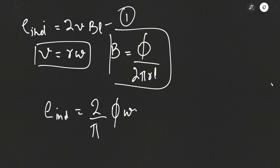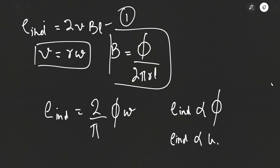We can know two things from this: E induced is proportional to φ, and E induced is proportional to ω. So greater the flux or the field, more will be the voltage induced in the rotating loop, and greater the speed of rotation, more will be the induced voltage. For a DC generator, increasing the magnitude of field or the rotation speed will increase the induced voltage.